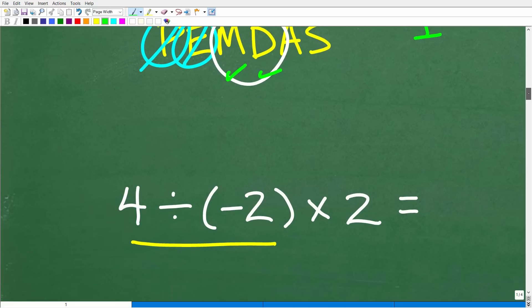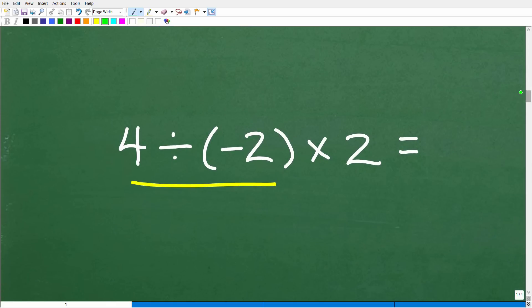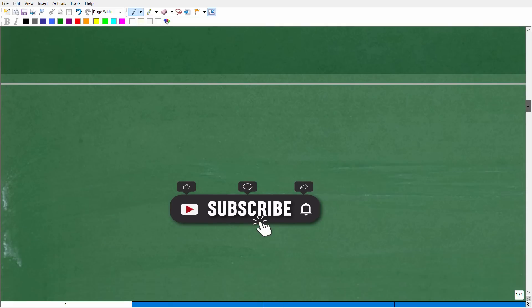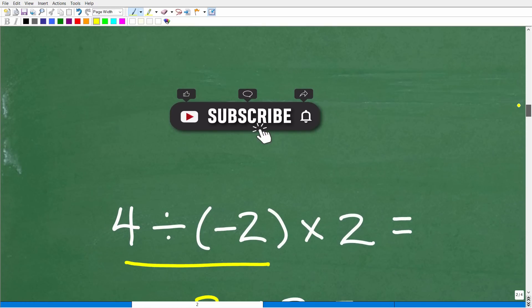All right, so let's go ahead and finish this problem up. So here, we're going to be doing division, right? Because we just talked about that. This is what we see first from left to right. So 4 divided by negative 2, we're going to get that answer, then multiply by 2. So let's go ahead and take the next step, which, of course, is having you subscribe to my YouTube channel.